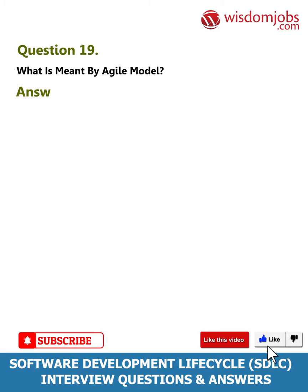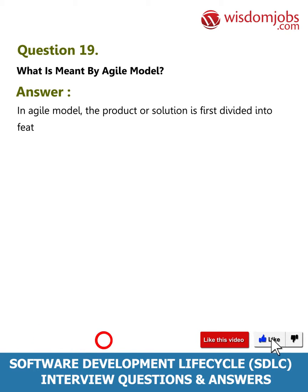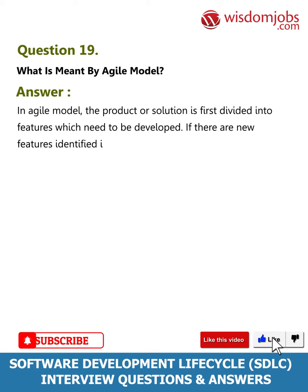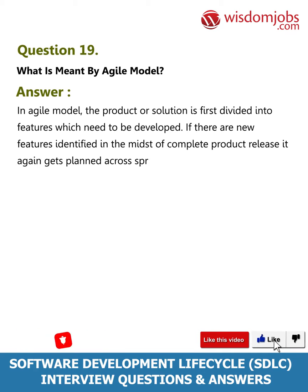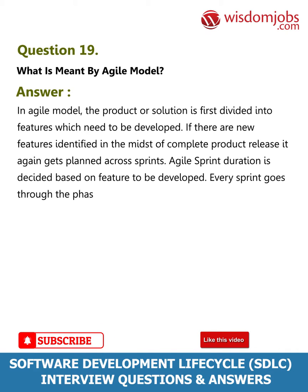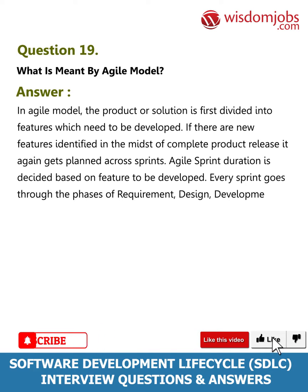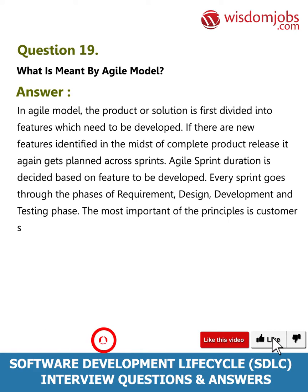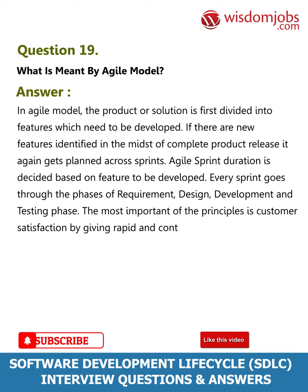Question 19: What is meant by agile model? Answer: In the agile model, the product or solution is first divided into features which need to be developed. If there are new features identified in the midst of a complete product release, it again gets planned across sprints. Agile sprint duration is decided based on the feature to be developed. Every sprint goes through the phases of requirement, design, development, and testing. The most important principle is customer satisfaction by giving rapid and continuous delivery of small and useful software.